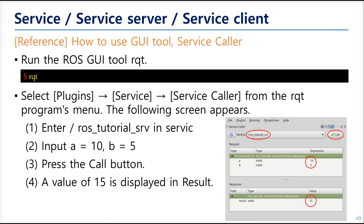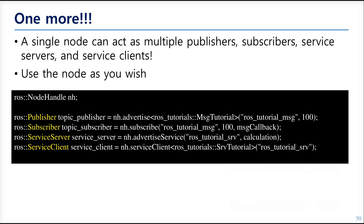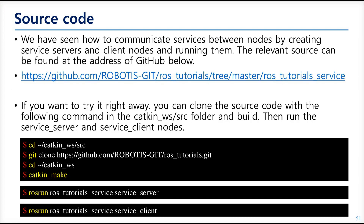On the other hand, if we had ROS topic echo for topic communication, now we have ROS service call for service communication. We can use it to send requests to the service server, so you don't need to make an extra service client just for checking the communication. You can also use an RQT plug-in with a service call. In fact, there are no nodes that can only publish, subscribe, or act as service server or client — you can combine subscribers, publishers, service servers, and clients all in one node. You can also get the source codes from GitHub.